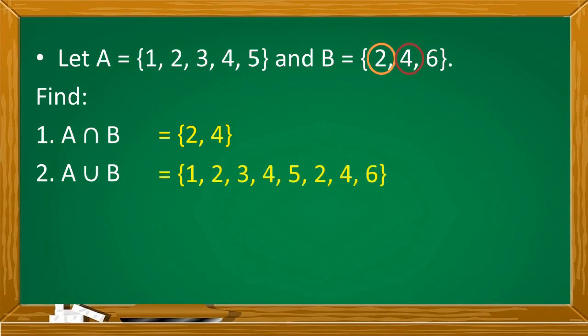Yung 2 and 4 ni set B ay present na kay set A. Dahil yun ang intersection or magkatulad nilang elements. So kahit i-disregard natin si 2 and 4. 6 na lang ang kailangan i-dagdag kay A. Dahil kapag isinama pa natin sila, mauulit lang yung mga elements.